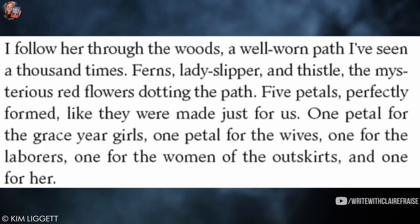The first paragraph reads: "I follow her through the woods, a well-worn path I've seen a thousand times. Ferns, lady slipper, and thistle — the mysterious red flowers dotting the path. Five petals perfectly formed like they were made just for us. One petal for the grace year girls, one petal for the wives, one for the laborers, one for the women of the outskirts, and one for her." The beginning of this paragraph doesn't give you that much, but this last sentence has lots of clues about the world building.